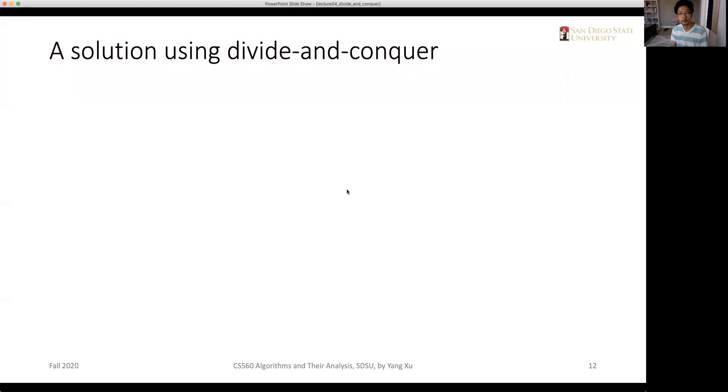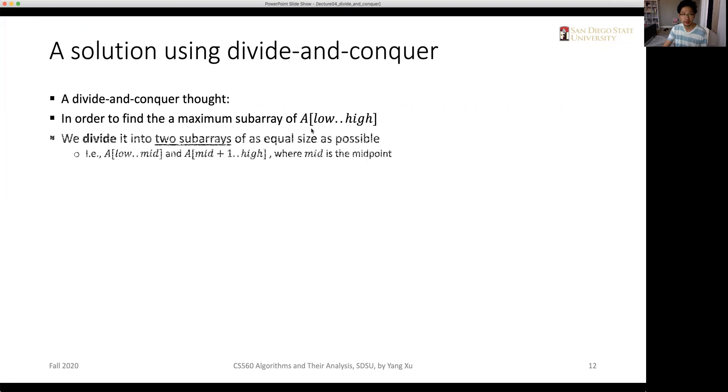Now let's look for a more efficient solution to the maximum subarray problem using a divide-and-conquer approach. The divide-and-conquer thought is to find the maximum subarray of A by first dividing it into two subarrays.